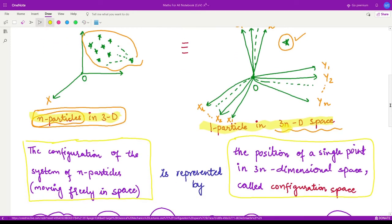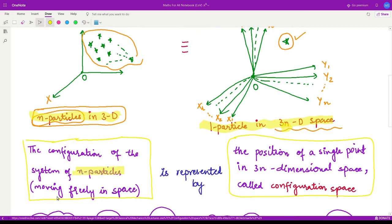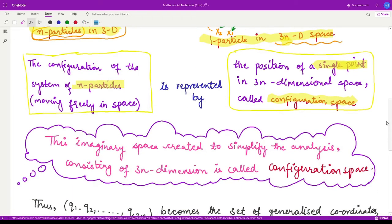So the configuration of the system of n particles which are moving freely in space, that is they are not interacting with each other at all, is now represented by the position of a single particle in three n dimensional space which is known as the configuration space. So now, in reality, this space does not exist. But for the sake of simplicity and everything, we have created this space, this imaginary space which is created to simplify the analysis consisting of three n dimension is called configuration space.